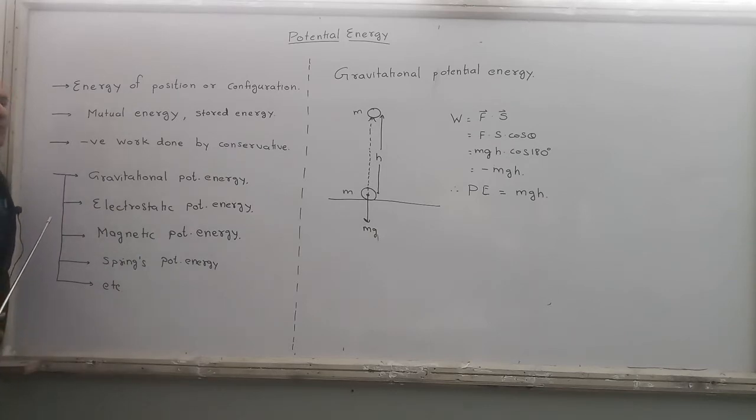Now, depending on the type of force, we have different types of potential energies. If gravitational force is operating on a system, then we will get gravitational potential energy. If the forces involved are electric in nature, then we will get electrostatic potential energy. If the forces involved are magnetic, then we get magnetic potential energy. And inside a spring, what kind of potential energy is there? That is called spring's potential energy.